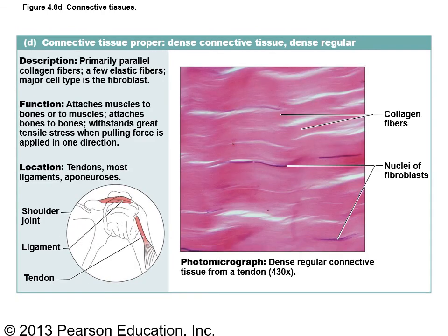Now under dense connective tissue: dense regular connective tissue has very few cells and a lot of collagen fibers all going in the same direction, so it resists pull and looks like a rope. Dense regular connective tissue is found in tendons and ligaments — tendons attach muscle to bone and ligaments attach bone to bone. It is very strong tissue with lots of collagen fibers.